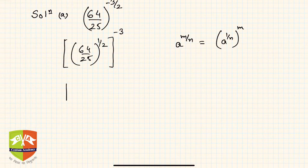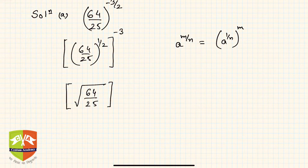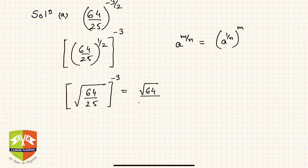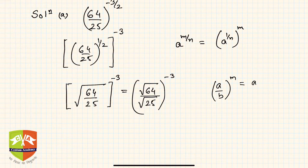Anything to the power half is the square root, so I can write this as the square root of (64/25), whole to the power minus 3. The square root of 64 by 25 can be written as root of 64 divided by root of 25, using the rule (a/b)^m = a^m / b^m.